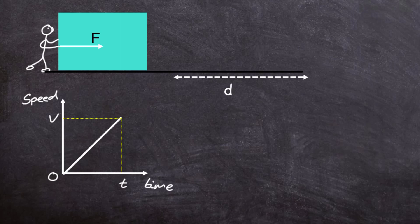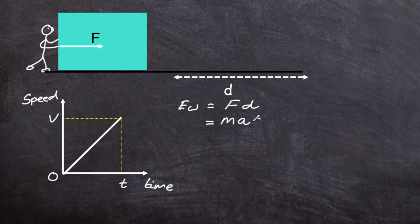We know from our equation that EW, which is the work done, is equal to the force applied times the distance. But we know that the force equals the mass of the block times the acceleration, so substituting F with MA, the work done by the force on the block is M times A times D. We'd like to get an expression for both the acceleration and the distance travelled by the block.